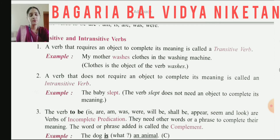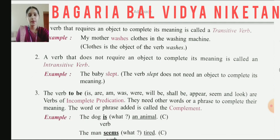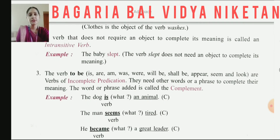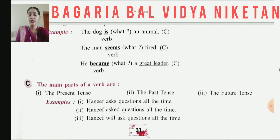We also learned about transitive and intransitive verbs — how we can differentiate between them, what a transitive verb is and what an intransitive verb is. Then we read about incomplete predication and complement as well, with examples. These things have been explained in your book, so it will be easier for you.